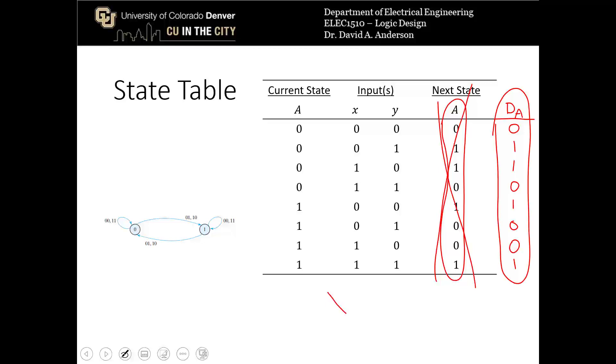The k-map for d sub a in terms of a, x, and y is going to look like this. So for a and x being 0 and y being 0, d sub a is 0. So we can just move through the min terms then. 0, 1, 1, 0, 1, 0, and 0, 1. All right, we've got a checkerboard pattern on this k-map. Which means that the expression for d sub a comes out to be a exclusive or x exclusive or y.